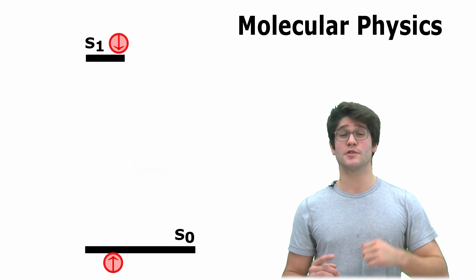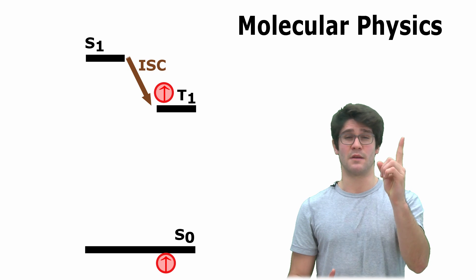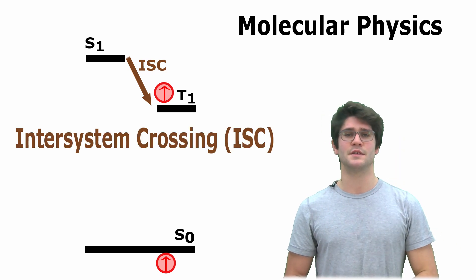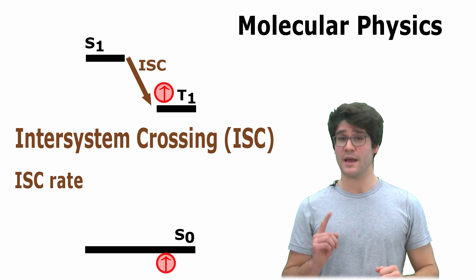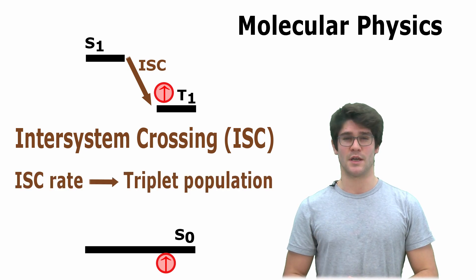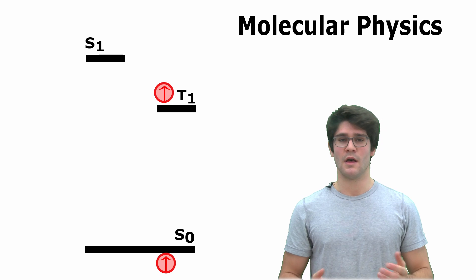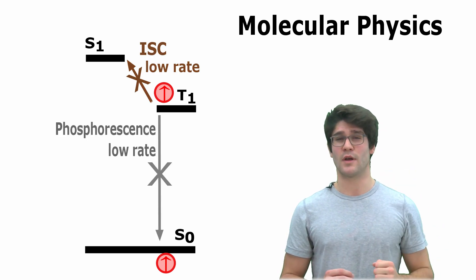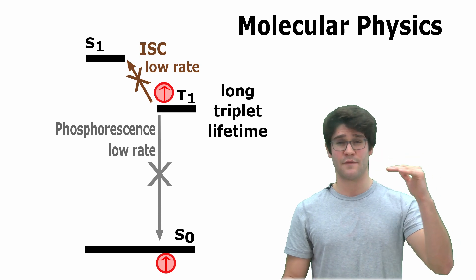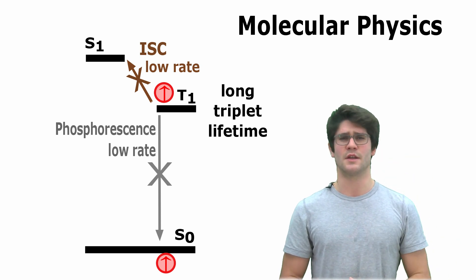A singlet can also become a triplet by flipping a spin, in a process called inter-system crossing. This is usually forbidden, but the rate can be enhanced, yielding high triplet population. On the other hand, a low inter-system crossing, together with the spin prohibition of direct relaxation down to ground state, give triplets long lifetimes, which is useful to store energy.